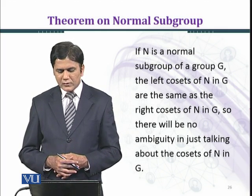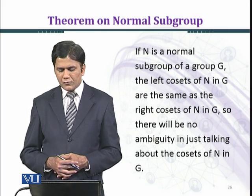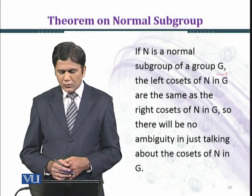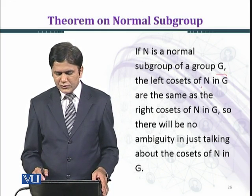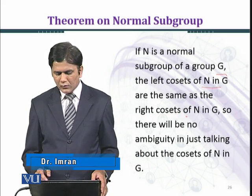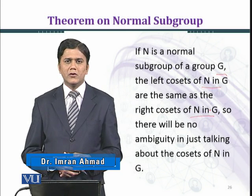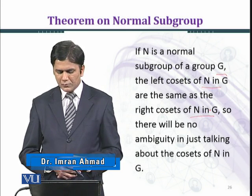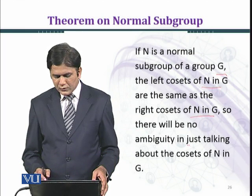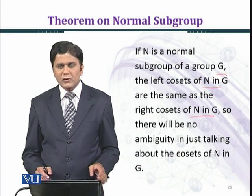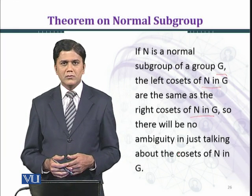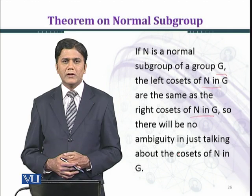If N is a normal subgroup of a group G, the left cosets of N in G are the same as the right cosets of N in G. This is the condition of being a normal subgroup, so there will be no ambiguity in just talking about the cosets of N in G, because left cosets and right cosets are equal.